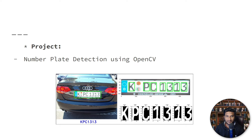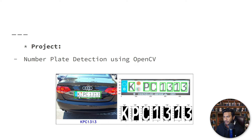Hello everyone, welcome to my YouTube channel. In this video we'll be implementing an amazing project called number plate detection using OpenCV. We'll be building a system that is able to detect a car's number plate and extract that number plate portion — the ROI (region of interest). Then we'll apply OCR, that means optical character recognition, and extract the numbers from the plate itself.